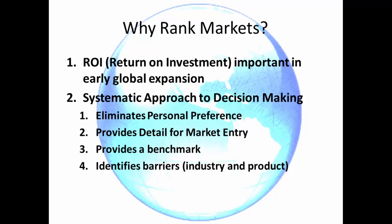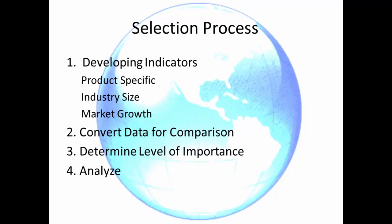We'll take a look at a little more detail. The selection process. Number 1: developing indicators, also known as selection criteria. Product-specific indicators include the level of current imports and exports. Industry size indicators include the population, per capita income, and total market size. Market growth indicators include growth projections of total market.